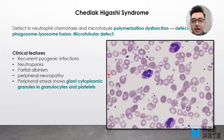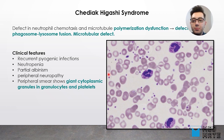Clinical features include recurrent pyogenic infections, because the lysosome cannot fuse with the phagosome, as well as neutropenia and partial albinism. The albinism occurs because melanocytes produce melanin, but due to the microtubule defect, melanin cannot be trafficked to the peripheral tissue, leading to partial albinism.